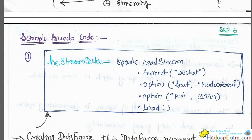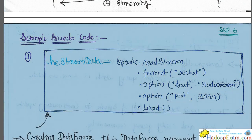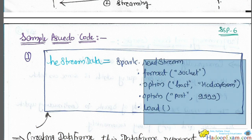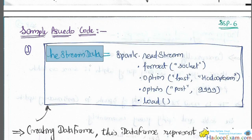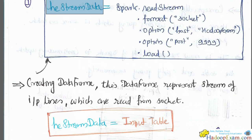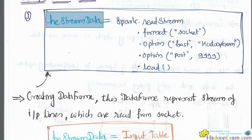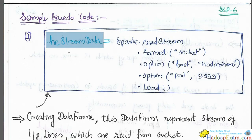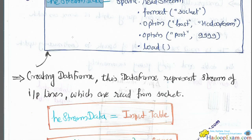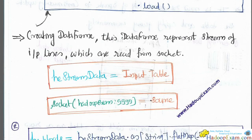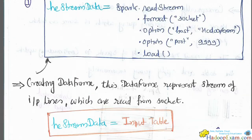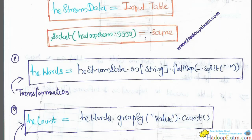Let's look at the previous sample code. We are telling Spark Streaming to read from the socket, and those are the connection details. The DataFrame name here is `heStreamData` — we are creating a DataFrame that represents a stream of input lines read from the socket. What is the input table here? This is the input table — this is the place where we read data from the stream. `heStreamData` is your input table — an unbounded input table where data is continuously added.